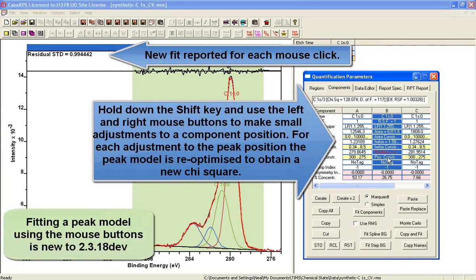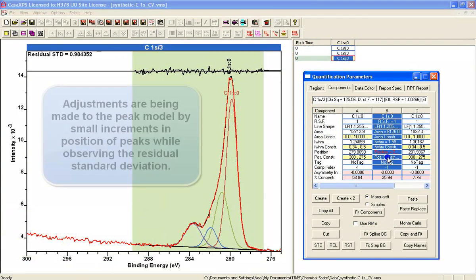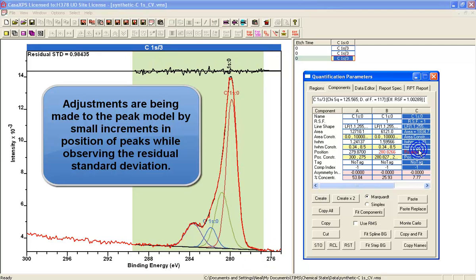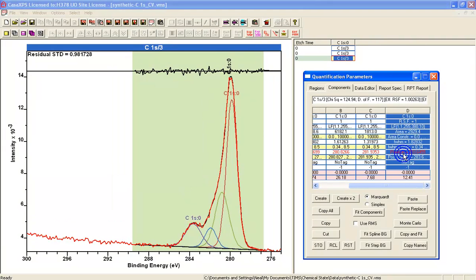Now we can even start to improve this residual standard deviation. This option allows you to fix a peak position and then just move it slightly and refit. So what we're doing is holding the shift key down and then clicking the left and right mouse buttons to move the peak and refit the data. And the idea is that we should come up with a better residual standard deviation and therefore hopefully a better peak model.